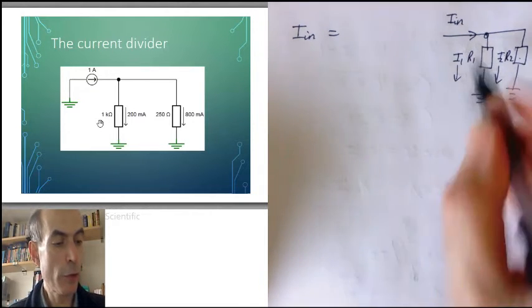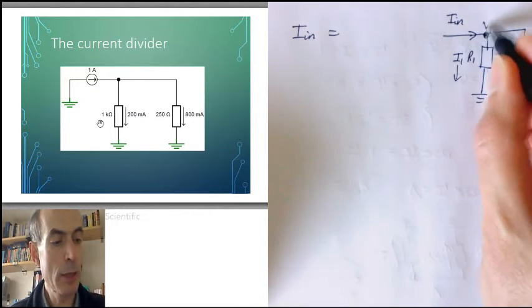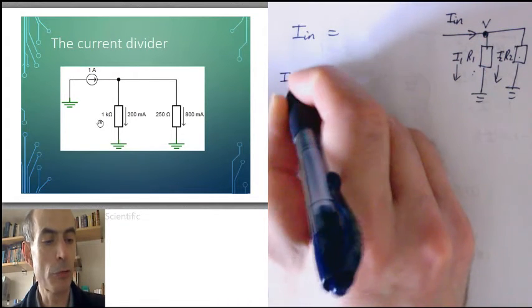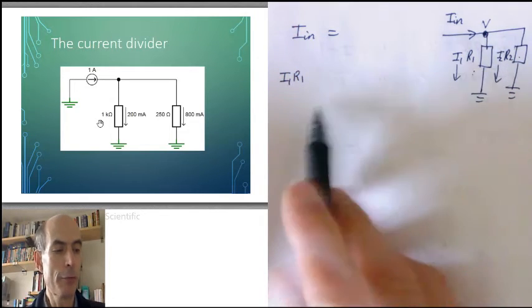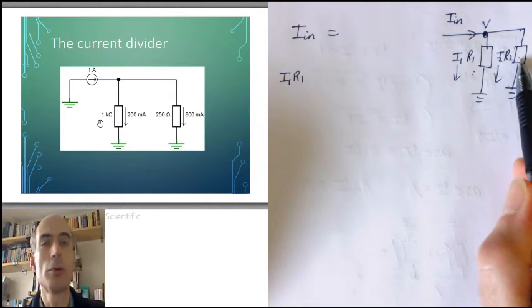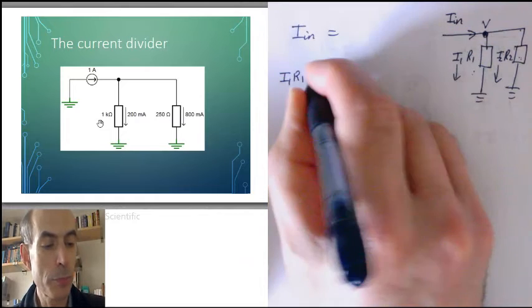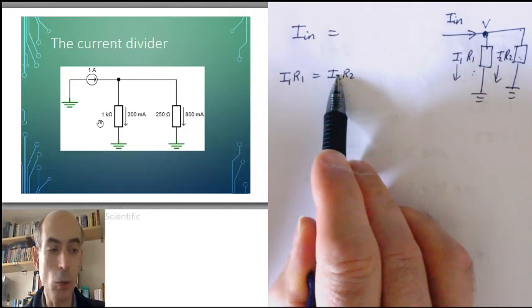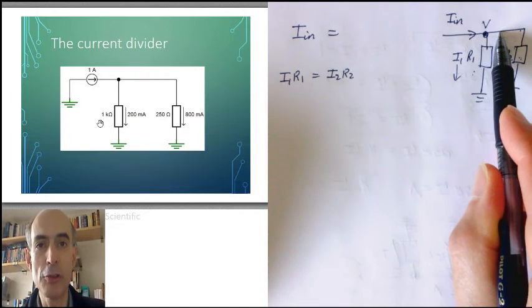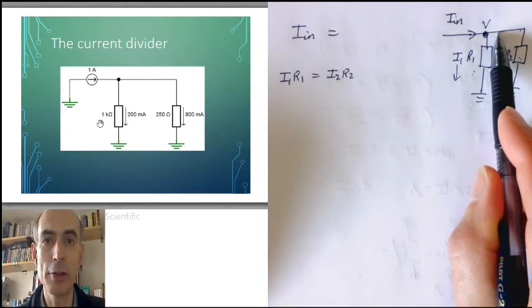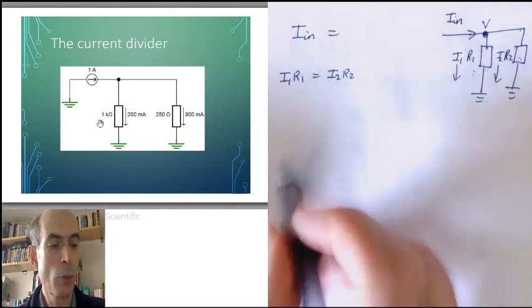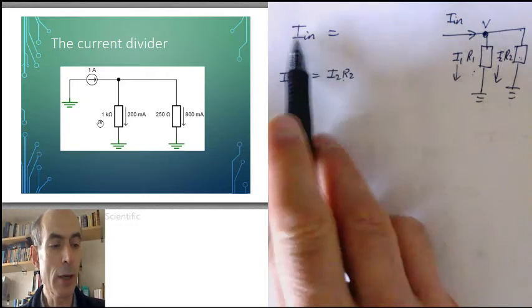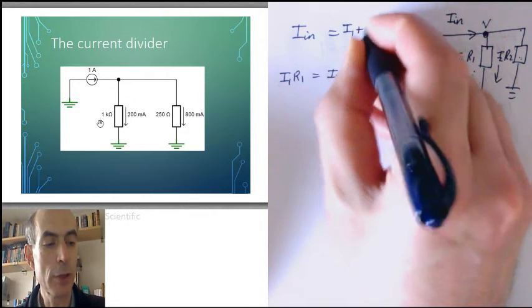Now, we know that the voltage at this point here, applying Ohm's law to this resistor, must be I1 times R1. And the voltage at this point here, by applying Ohm's law to R2, would just be I2 times R2. And we know that these must be equal, because it's the same voltage at the same point in the circuit. Therefore, we have this. We also know from Kirchhoff's current law that I in is I1 plus I2.